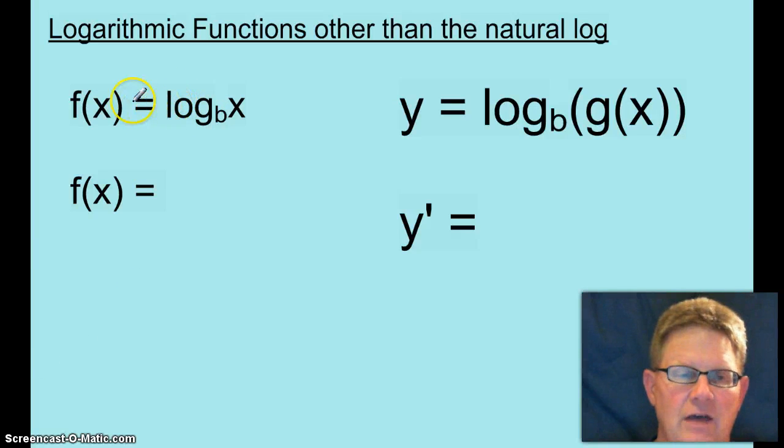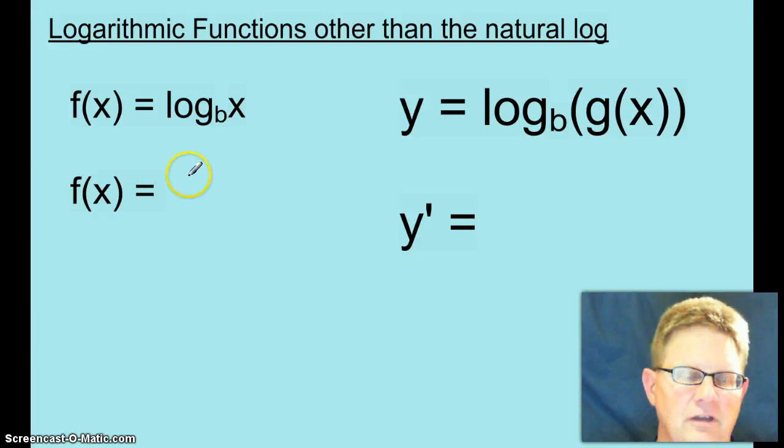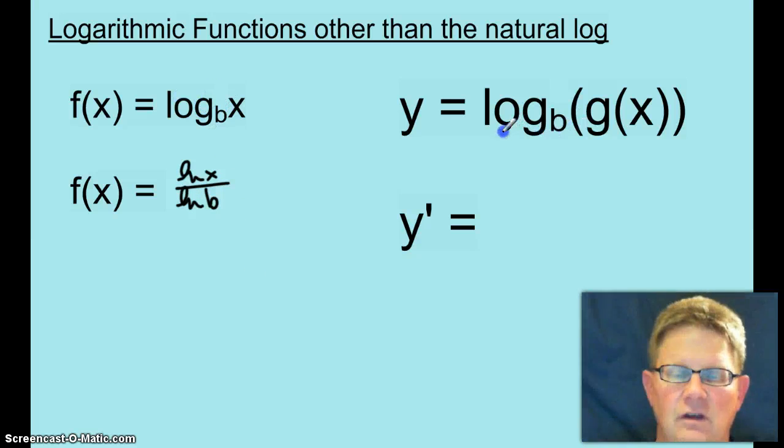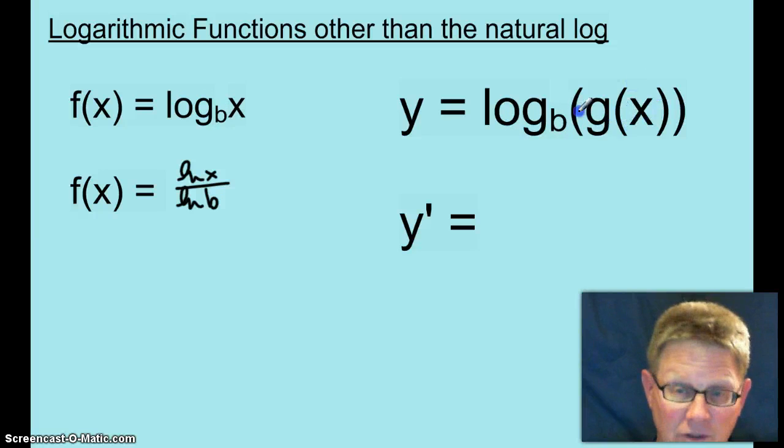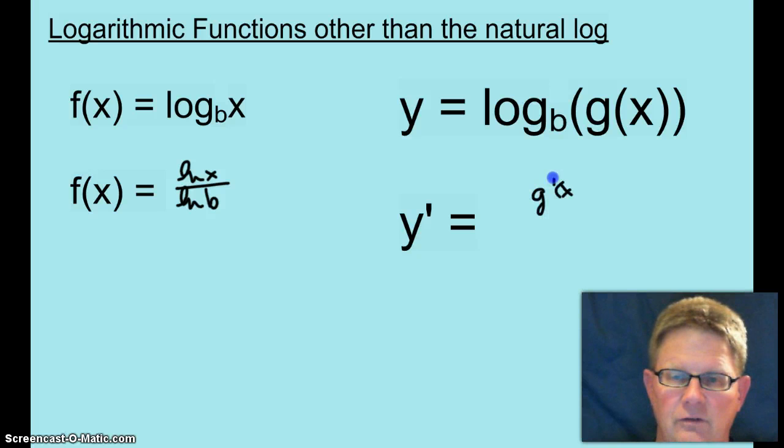If f of x equals log base b of x, then f prime of x can be written as the ln of x over the ln of the base times g of x.